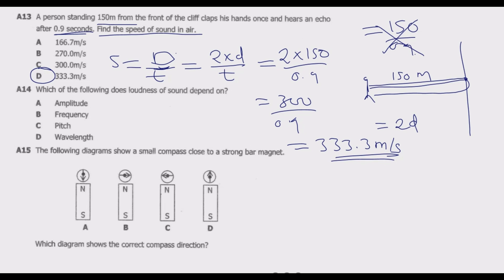Question 14: which of the following does loudness of sound depend on? The loudness of sound depends on amplitude. The pitch of sound depends on frequency. The bigger the amplitude, the more energy it carries, hence the louder it is. The lower the amplitude, the lower the energy the wave carries and the lower the loudness.